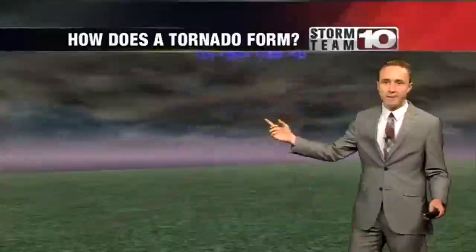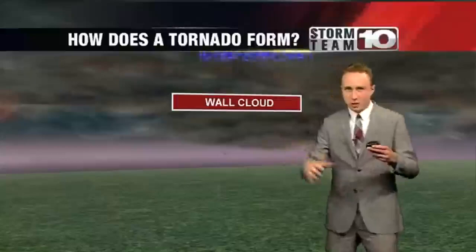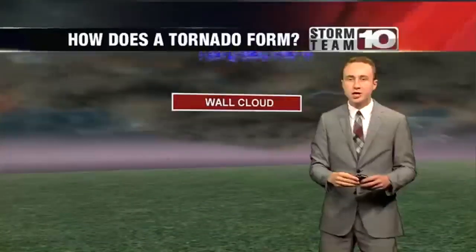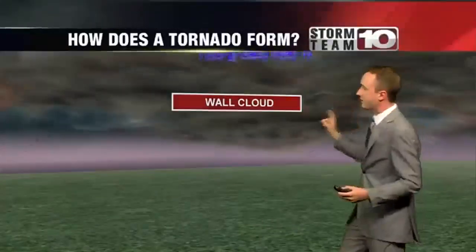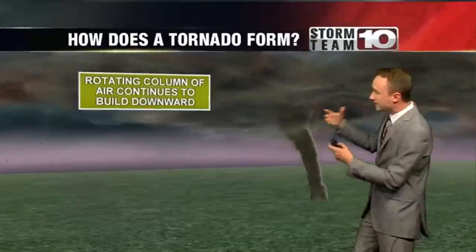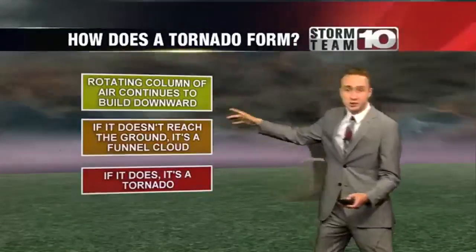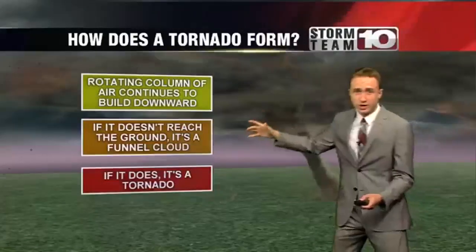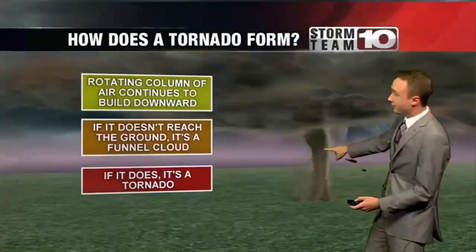That creates a spinning region of the thunderstorm. And once that happens, you're actually going to see a wall cloud form. That's a typical telltale sign that a storm may produce a tornado — when you see a cloud hanging down, that's what we call a wall cloud, and it's rotating. That may then produce a tornado as the rotating column of air continues to build downward. If it doesn't hit the ground, it's actually a funnel cloud.